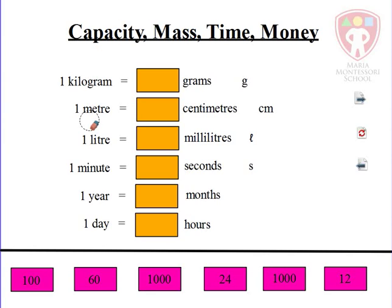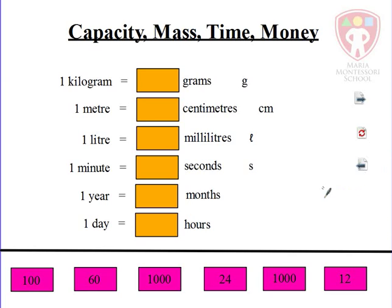Capacity, mass, time, and money. Here we need to know really how to convert between various types of measures — various types of capacity, various types of mass, various types of time, and various types of money.